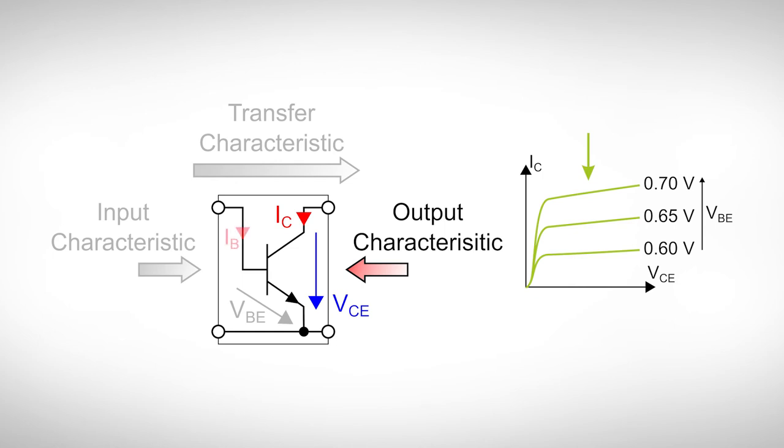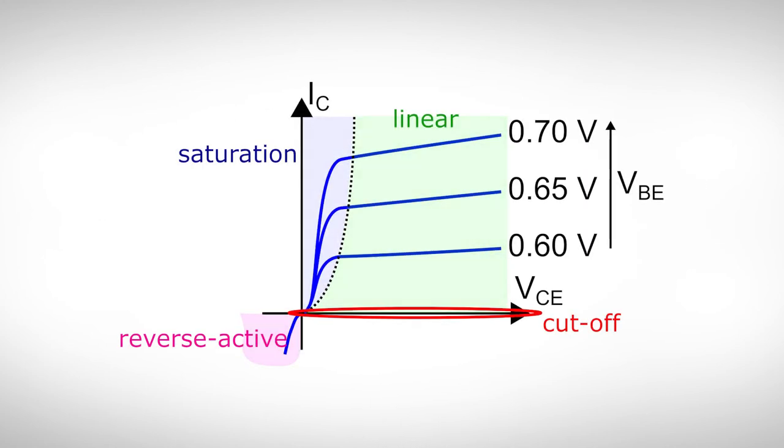If we apply a certain base current or base emitter voltage, we simply select one of these lines. This characteristics field can be divided into different regions of operation in which the transistor has different properties. Those are the cutoff region, the forward active region, the saturation region and the reverse active region.